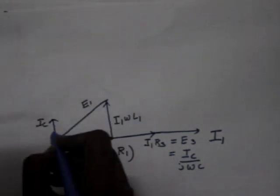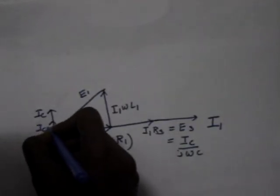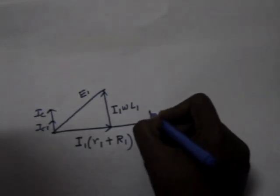And Ic into R - this current will be in the same phase. This drop will be in the same phase. So this one will be Ic into R.